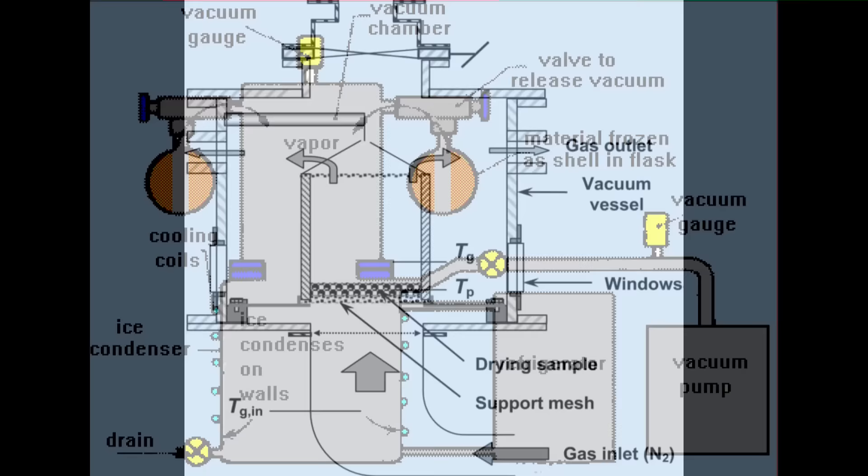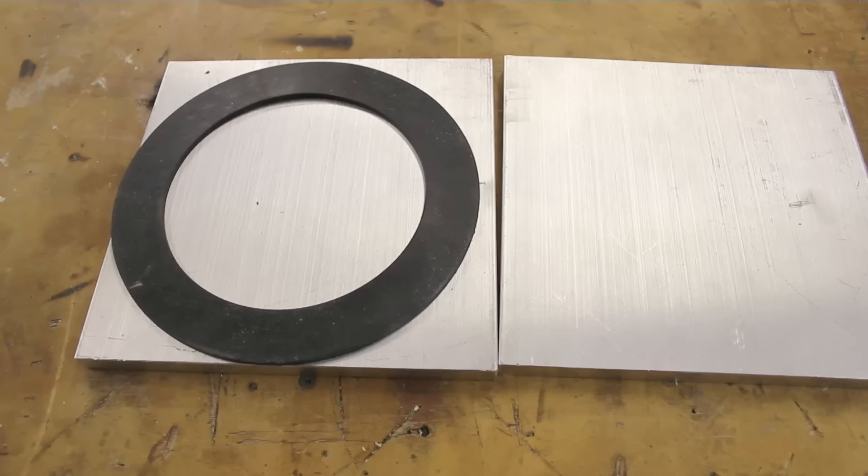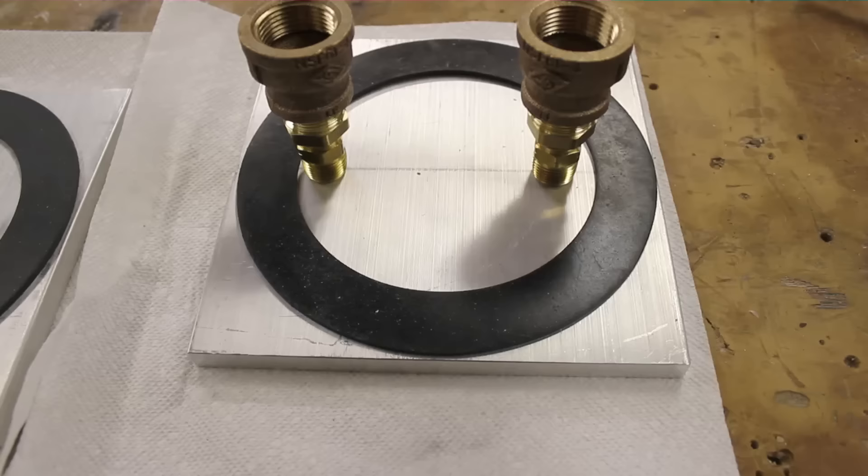I started off by getting two 8 by 8 by half inch thick aluminum plates, and I found some pre-stamped rubber gaskets online that fit my plates. You can always just cut your own out of some tire inner tube. The gaskets help decide where to drill the holes.